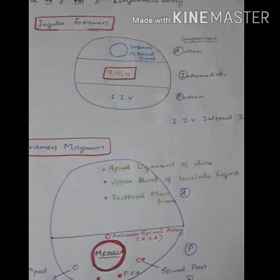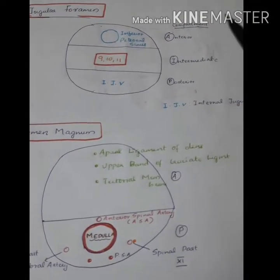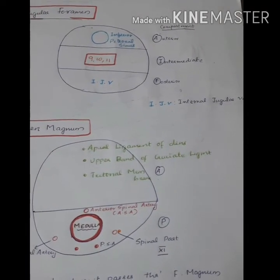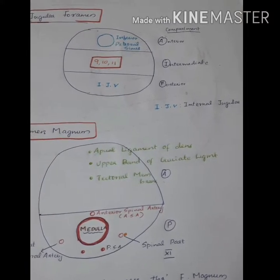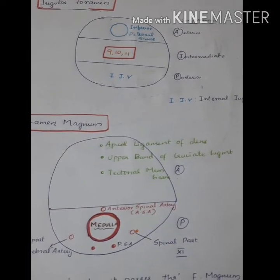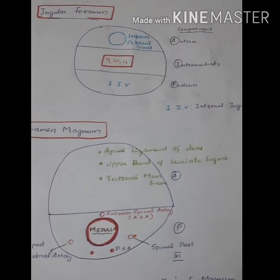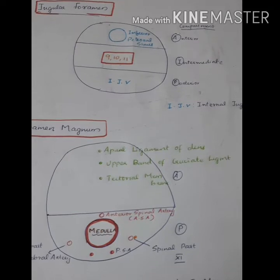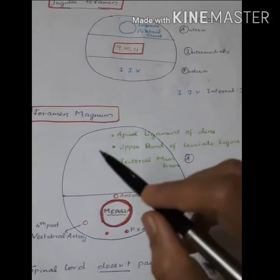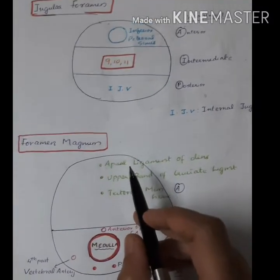Next is the jugular foramen. The jugular foramen can be divided into three compartments: anterior, intermediate, and posterior. Through the anterior compartment, the inferior petrous sinus is present. Through the intermediate compartment, the 9th, 10th, and 11th cranial nerves pass. Through the posterior compartment, the internal jugular vein passes.